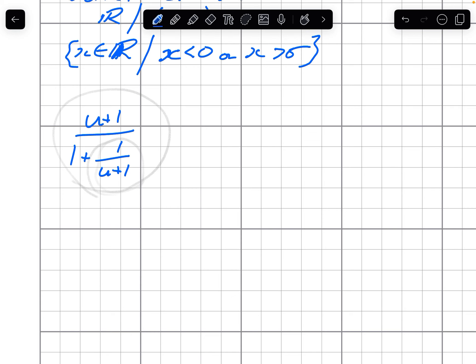So problems will occur when u plus 1 equals 0 or u equals negative 1. We'll also have problems when 1 plus 1 over u plus 1 equals 0. Which we can solve that for u. 1 over u plus 1 equals negative 1, which means u plus 1 equals negative 1, or u equals negative 2.